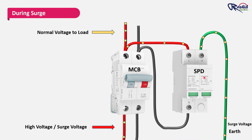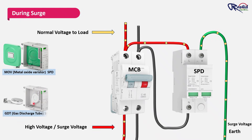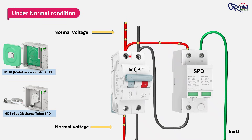Inside the SPD, there are two main types of protective parts: the metal oxide varistor, called MOV, and the gas discharge tube, called GDT. MOV reacts fast and reduces the voltage, while GDT works like a small spark gap to discharge big surges. Both types are designed to keep the extra voltage away from your equipment. They quickly switch on during surges and switch off again once things return to normal. This whole action happens in microseconds.